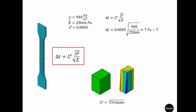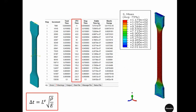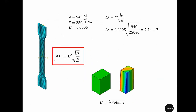For this simulation I used LDP, which had a density of 940 kg/m³, a Young's modulus of 250 MPa, and a characteristic length of about 0.0005 m. Putting these values into the formula gives approximately 7.7e-7, which is close to the stable time increment reported by Abaqus. Increasing this stable time increment 10 times will speed up the simulation by 10 times.